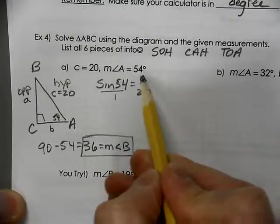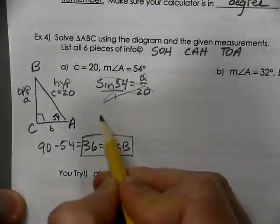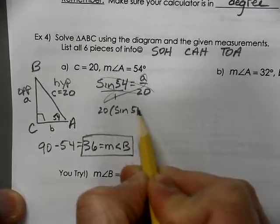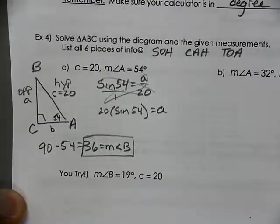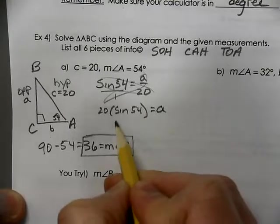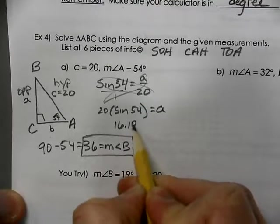Put your trig over 1, cross multiply. So we get 20 times the sine of 54, which equals A. And then using your calculator, you can figure out that that is 16.18.